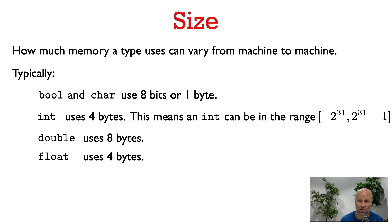Typically, a double precision floating point number uses 8 bytes, and a single precision floating point number uses 4 bytes, like an int.